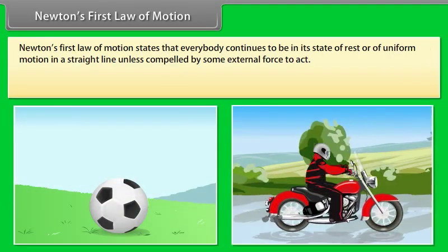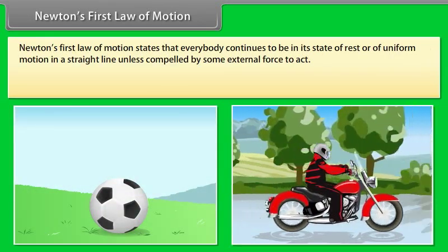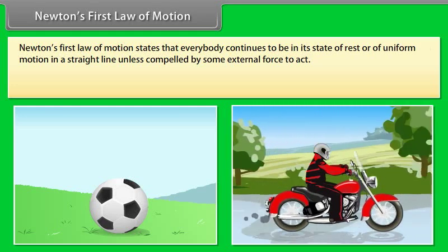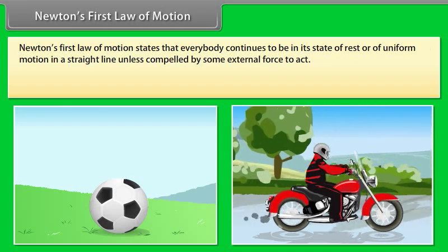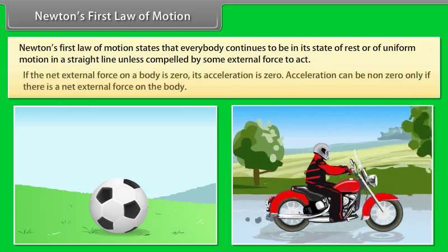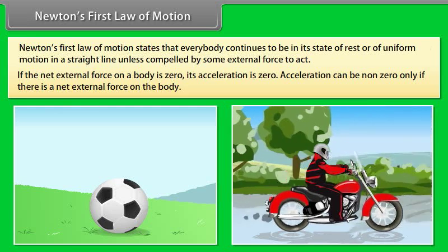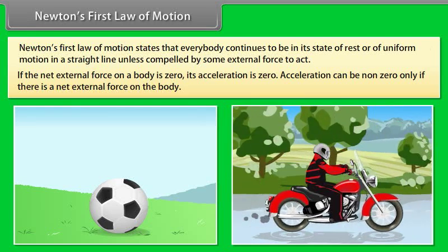Newton's first law of motion states that every body continues to be in its state of rest or of uniform motion in a straight line unless compelled by some external force to act. If the net external force on a body is zero, its acceleration is zero. Acceleration can be non-zero only if there is a net external force on the body.